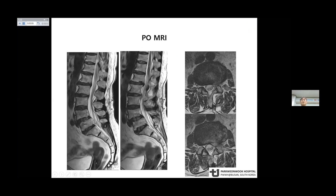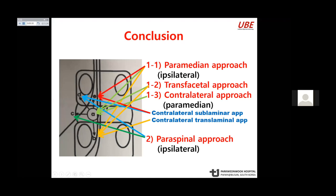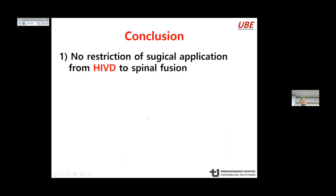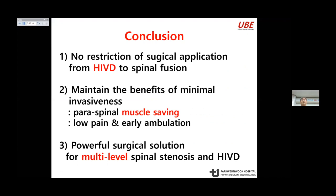In conclusion: a superior migrated pattern — paraspinal approach or contralateral translamina approach is applicable. An inferior migrated pattern — paramedian or contralateral translamina approach. Extra-foraminal disc — paraspinal approach. Foraminal disc herniation — contralateral sublamina, or for upper lumbar cases, the paraspinal approach is chosen. For superior migration, paraspinal and contralateral translamina approaches are selected. UV has no restriction in surgical application, from disc herniation to spinal fusion. UV maintains the benefit of minimal invasiveness and is a powerful surgical solution for multi-level spinal pathologies and disc herniation.